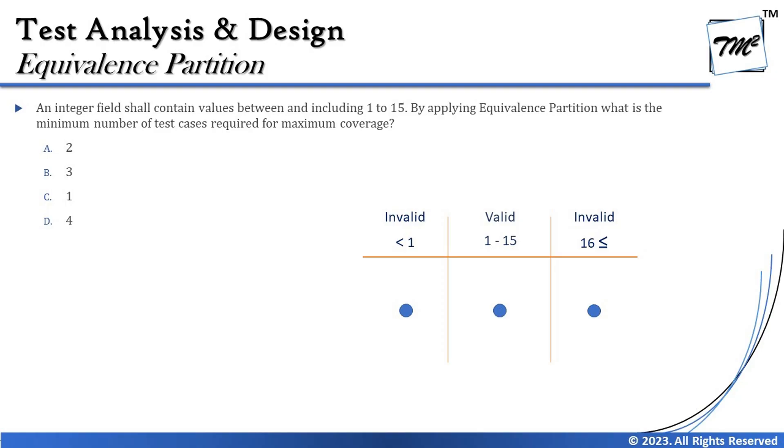People often ask why I didn't just club 'less than 1' and '16 and above' together. The reason is that these values are sequential. Unlike designations where you can group by category, sequential numeric values require separate partitions on each side. So for sequential ranges, you create three partitions: one valid (1 to 15), one invalid on the left (less than 1), and one invalid on the right (16 and above).